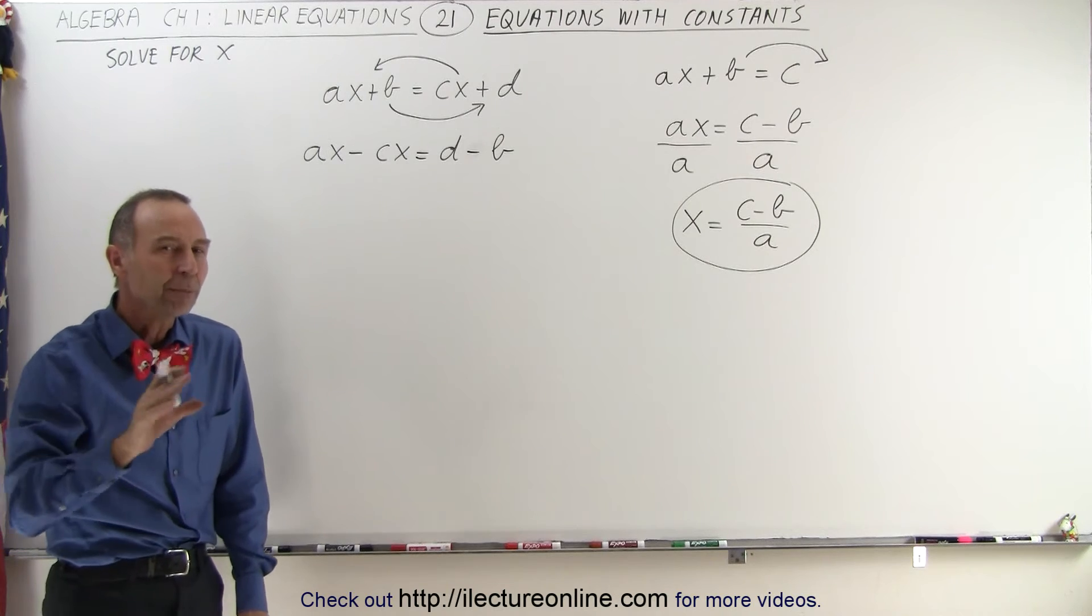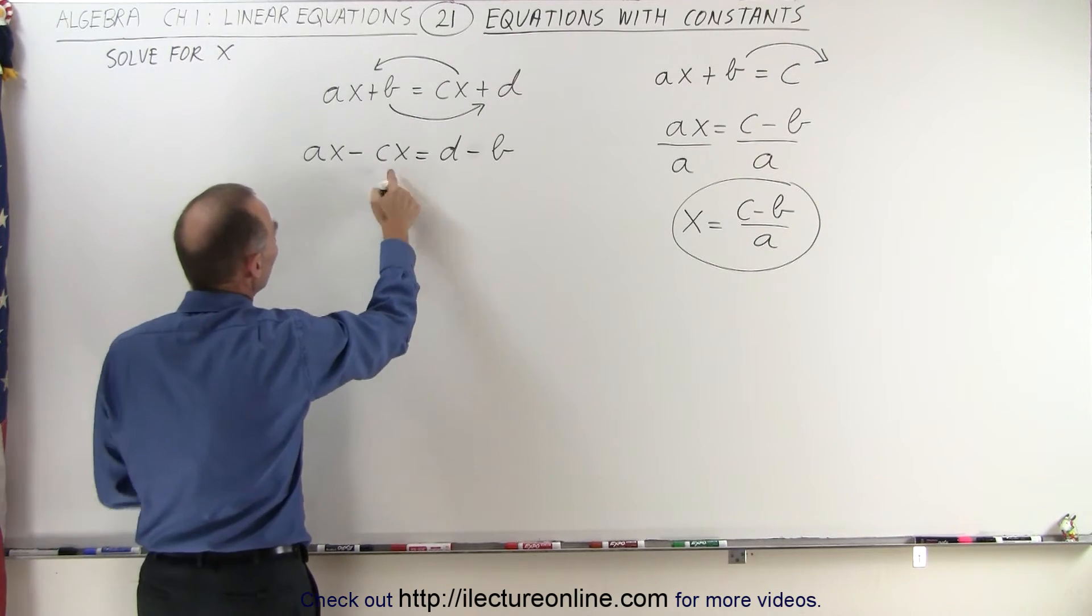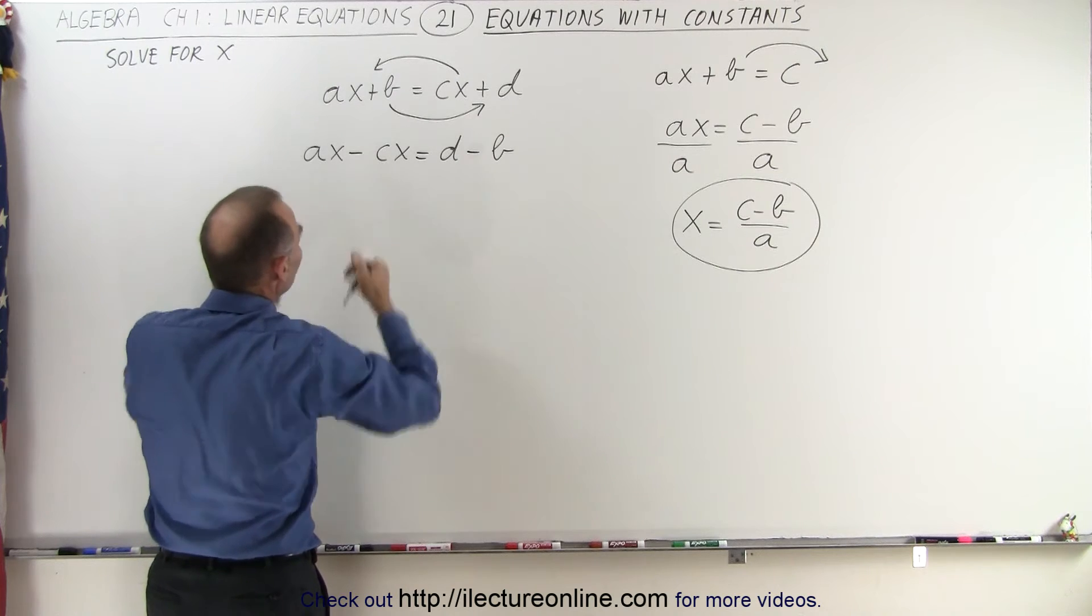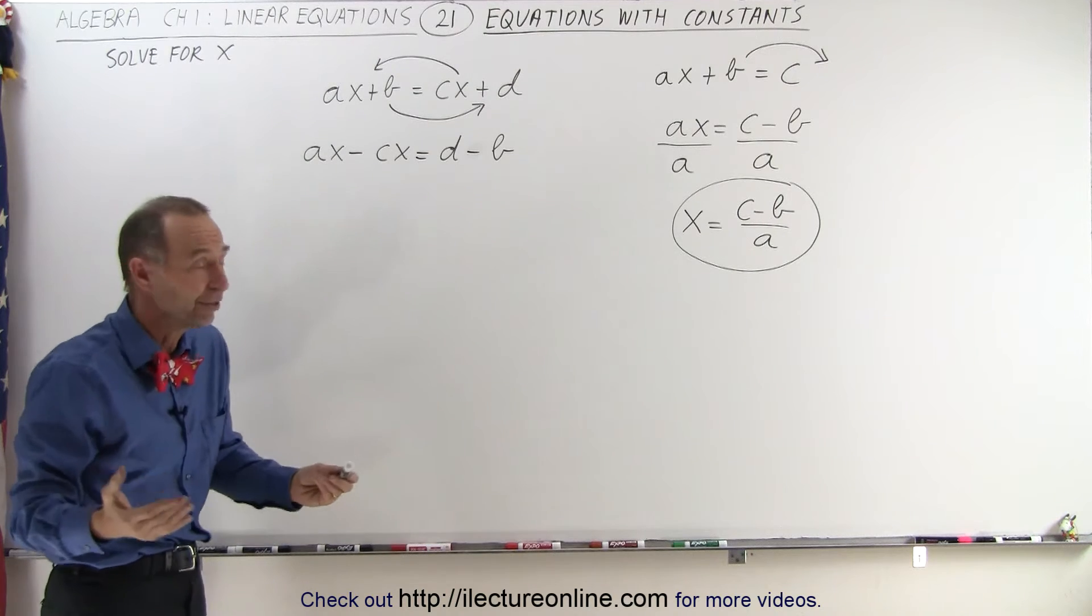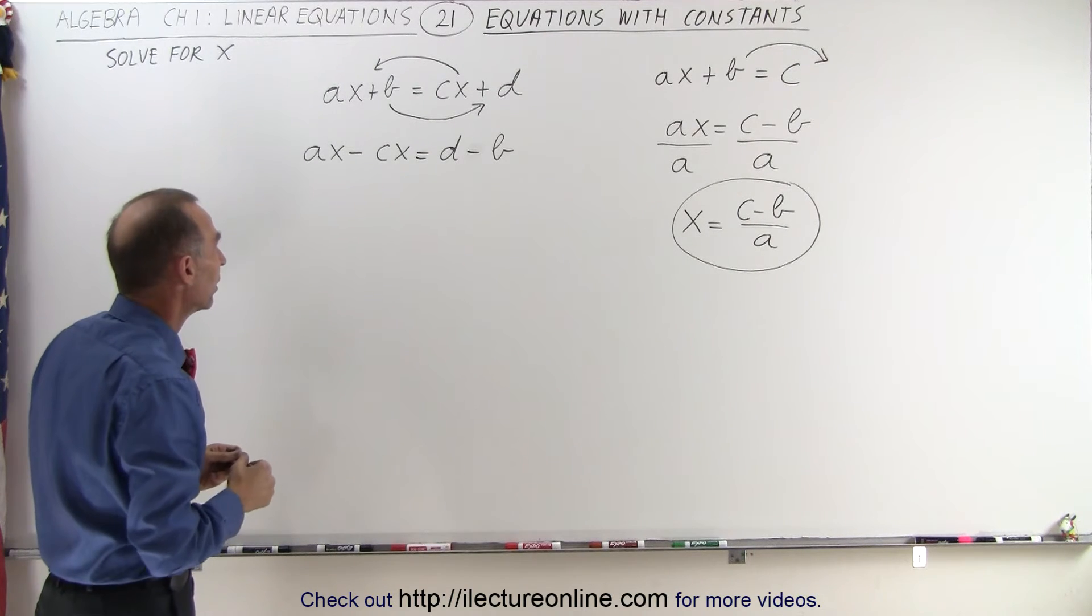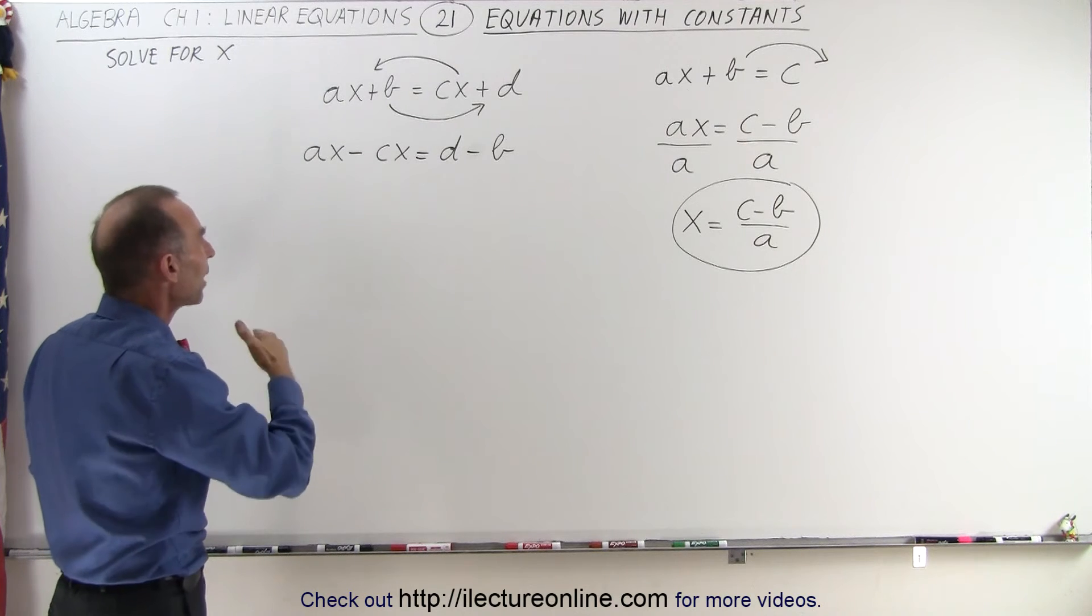Now the next step is a little bit different from what we're used to seeing. Here we have two terms we cannot add or in this case subtract them from one another because we do not know the value of A and C. They are representative numbers we just don't know what they are. So what we can do instead is factor out an X.